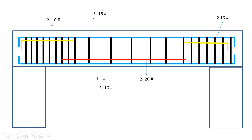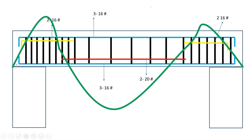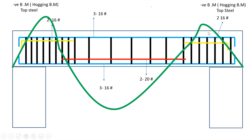Now we'll try to see how the bending moment of a beam happens. When a load is applied on the beam, the beam tries to bend. Near the support the beam will try to go up — this is called hogging bending moment, also called negative bending moment. From the center region, the beam is going to sag — this is called sagging bending moment, also called positive bending moment.